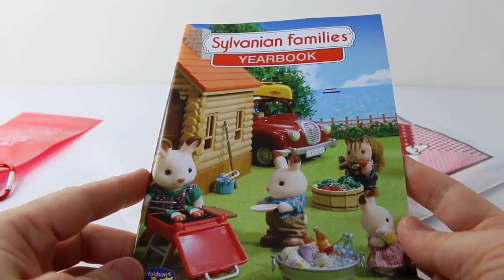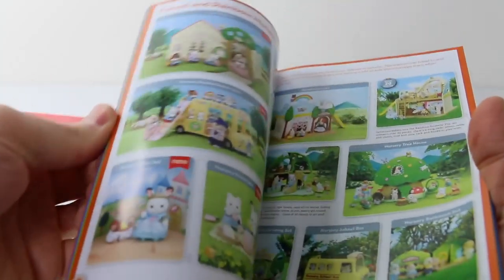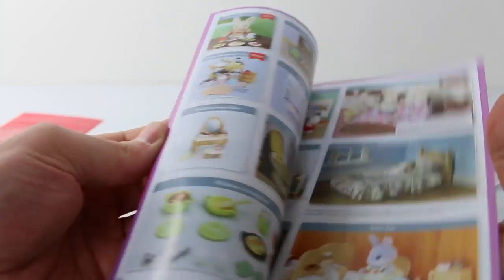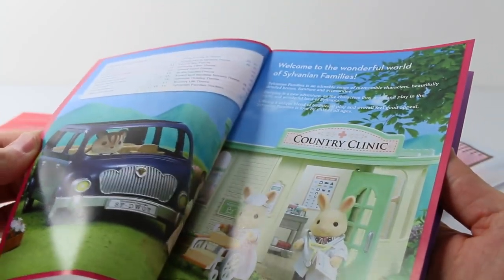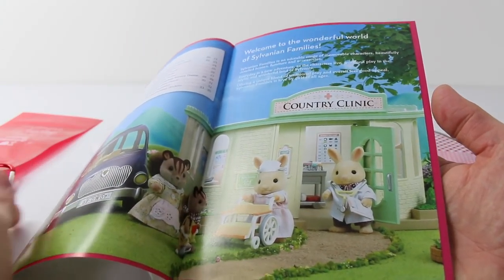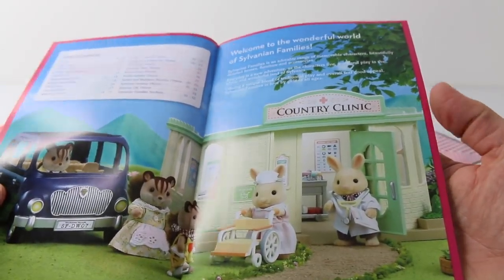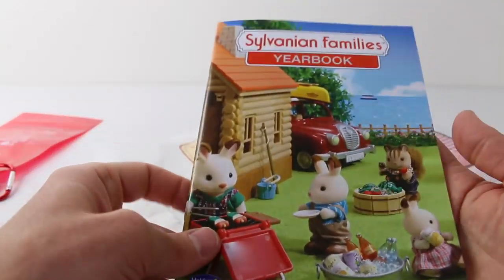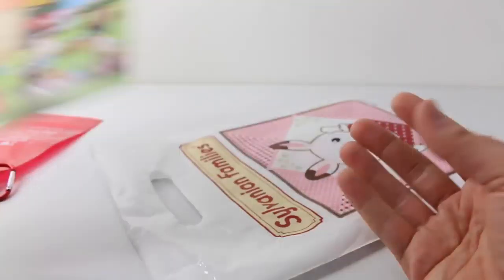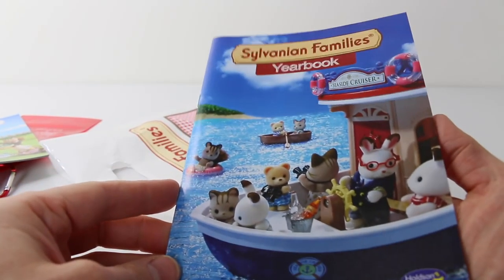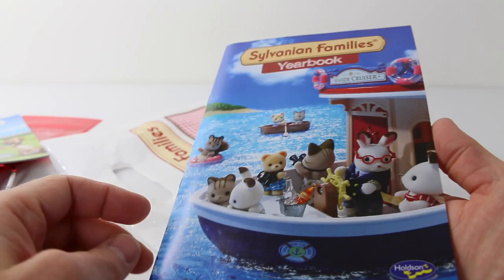I also have the Sylvanian yearbook. This has all the current collections that are available in the line. And that hospital is really cute so I'm going to have to review that at some stage. And this is another current yearbook and it has the cruise ship on the front which I've just recently reviewed.